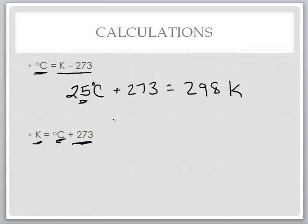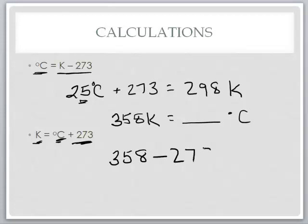Let's say we had a temperature of 358 Kelvins. And I said, how many degrees Celsius is that? Well, to calculate degrees Celsius, we take our Kelvin temperature and we subtract 273. And that gives us 85 degrees Celsius. So take your Kelvin temperature, subtract 273.